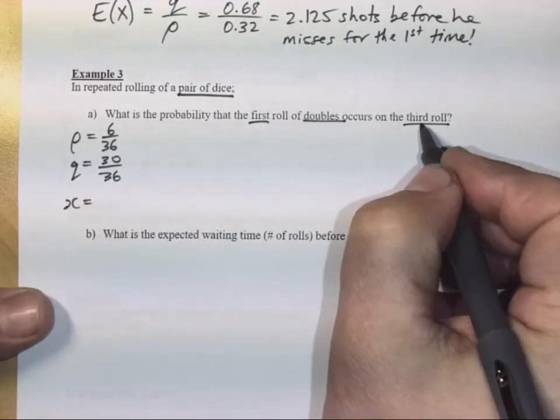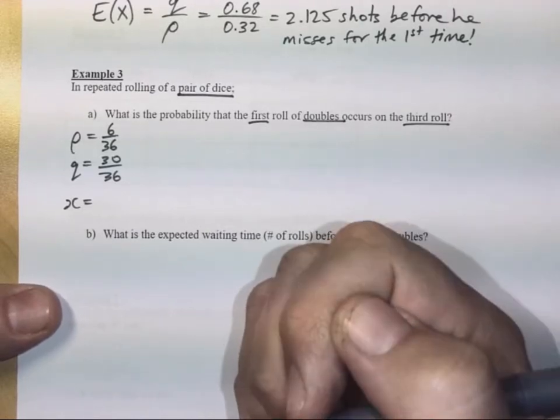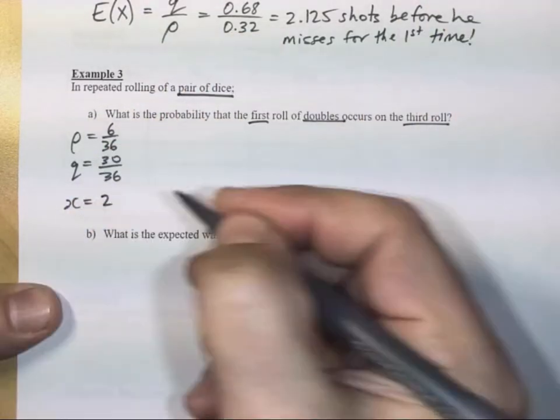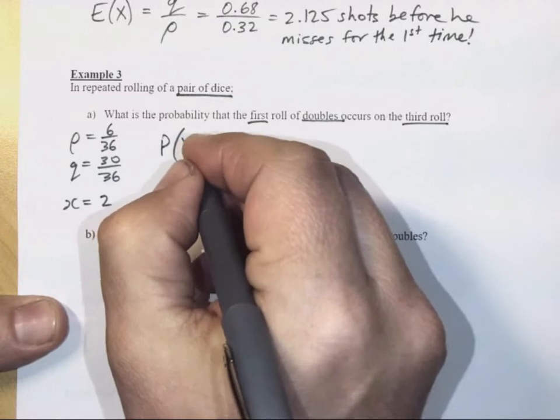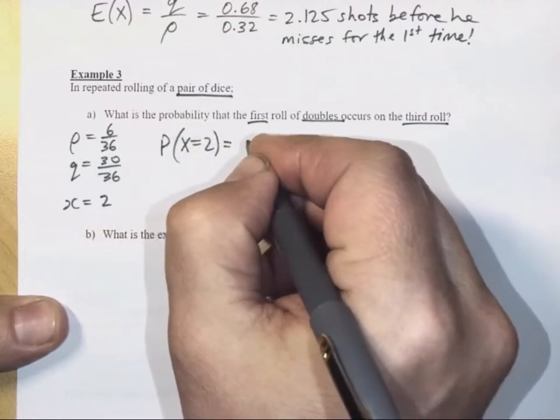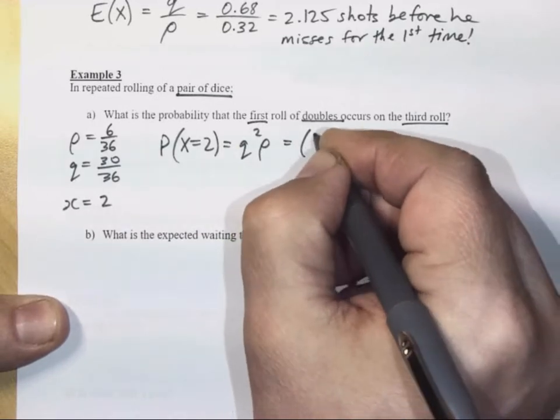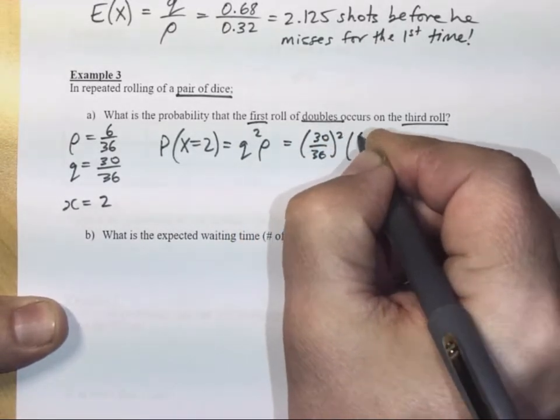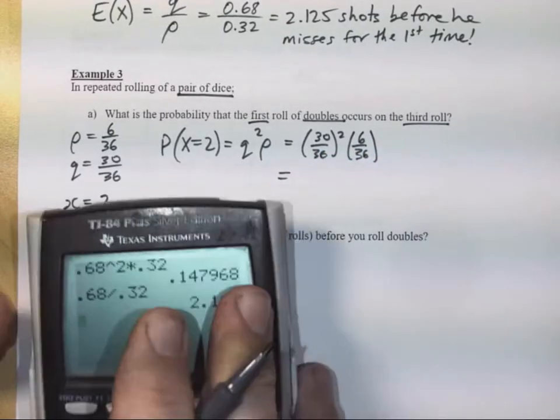X is equal to, well if this happened on the third roll, how many times did we have to wait until doubles occurred? We had to wait twice, so X equals 2. And the probability that X equals 2 is Q to the 2 times P, which is 30 in 36 to the 2 times 6 in 36, and you can reduce those fractions if you like, it's up to you.